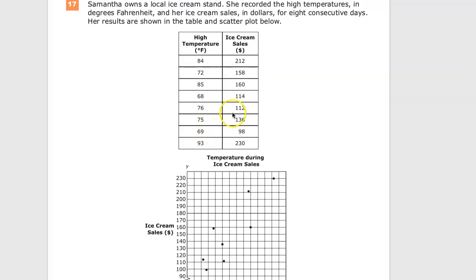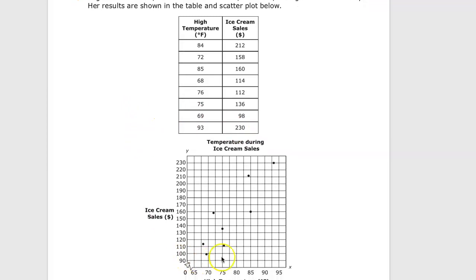She does relatively well once it gets above 80. This was a little of a weak day, but 84 and 212, 93, she made a lot of money. Here is the scatterplot related to that.